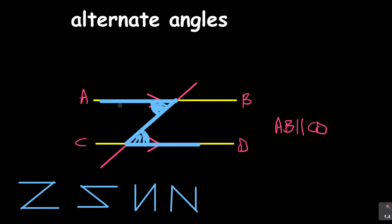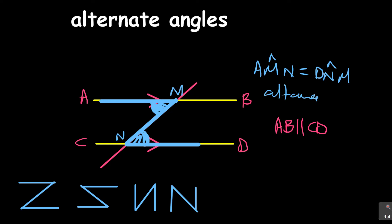So we are saying alternate angles are equal. If I had, for example, points M and N, what I will say is angle AMN is equal to angle DNM. Then AMN is equal to DNM. And then you're going to say the reason is alternate angles. And the condition is AB is parallel to CD.